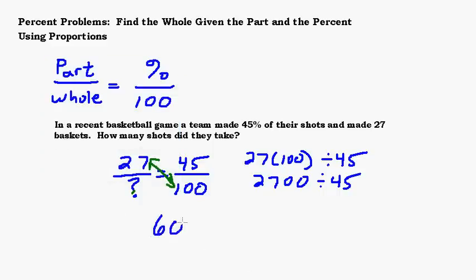So our answer is 60, which means they took 60 shots. Let's see if that answer makes sense. They made 27 baskets and we're saying they shot 60 times, which gave us 45%. If they would have made 50%, which is pretty close to 45%, and they shot 60 times, how many shots would they have made? Half, right? That would have been 30 that they made. But they made 45%, which is a little less than 50%, so they made a little fewer than 30. 27 is a good estimate. I feel good about my answer.